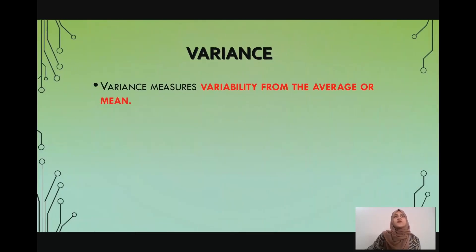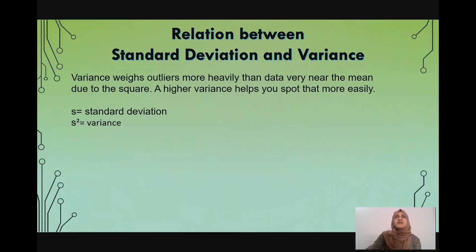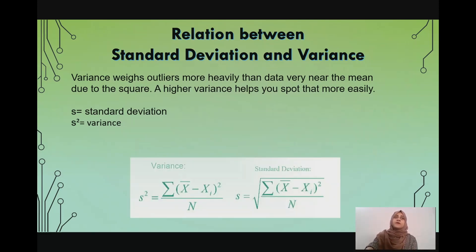Now we talk about variance. Variance measures variability from the average or mean, and it's denoted by sigma squared. If you remember, standard deviation is denoted by sigma, and variance is denoted by sigma squared, so you can easily figure out the relation between the two. It's calculated as the average squared deviation of each number from the mean of a data set. Variance weighs outliers more heavily than data very near the mean due to the squaring. To simplify, variance is equal to the square of standard deviation.